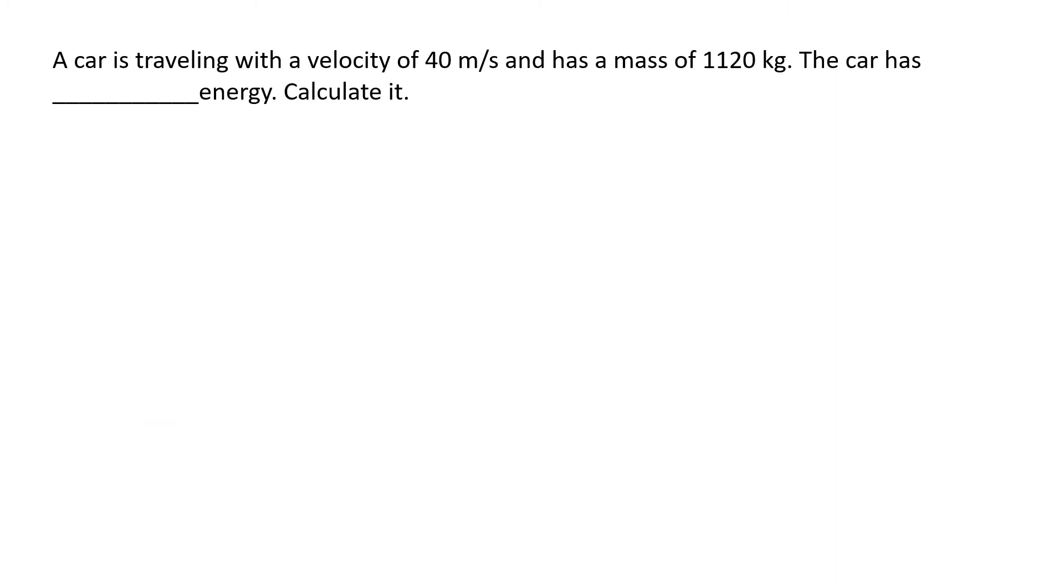Here is problem number three in your homework sets. It says that a car is traveling with a velocity of 40 meters a second. Oh this is a velocity. And has a mass of 1,120 kilograms. And I have a mass. So how much energy does it have and what kind of energy is it? So again number one I need to talk about the type of energy and the equation. Number two let's find our variables.